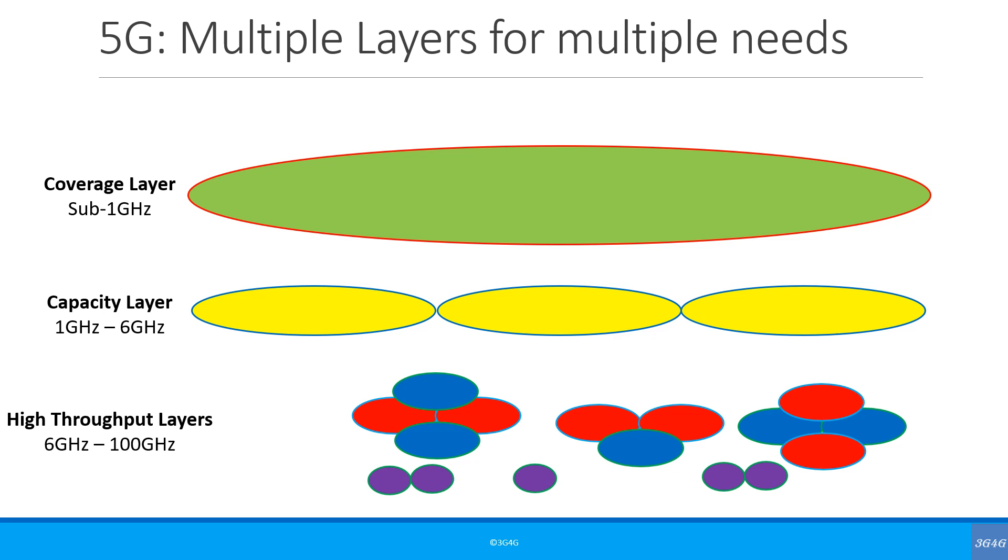Finally, you have a high throughput layer which uses the frequency between 6 and 100 GHz. As this is quite a high frequency, the cell sizes are generally quite small. Beamforming can help increase the cell size, but that adds to the weight, cost, and power consumption. Having said that, all high throughput layer solutions include massive MIMO and beamforming.